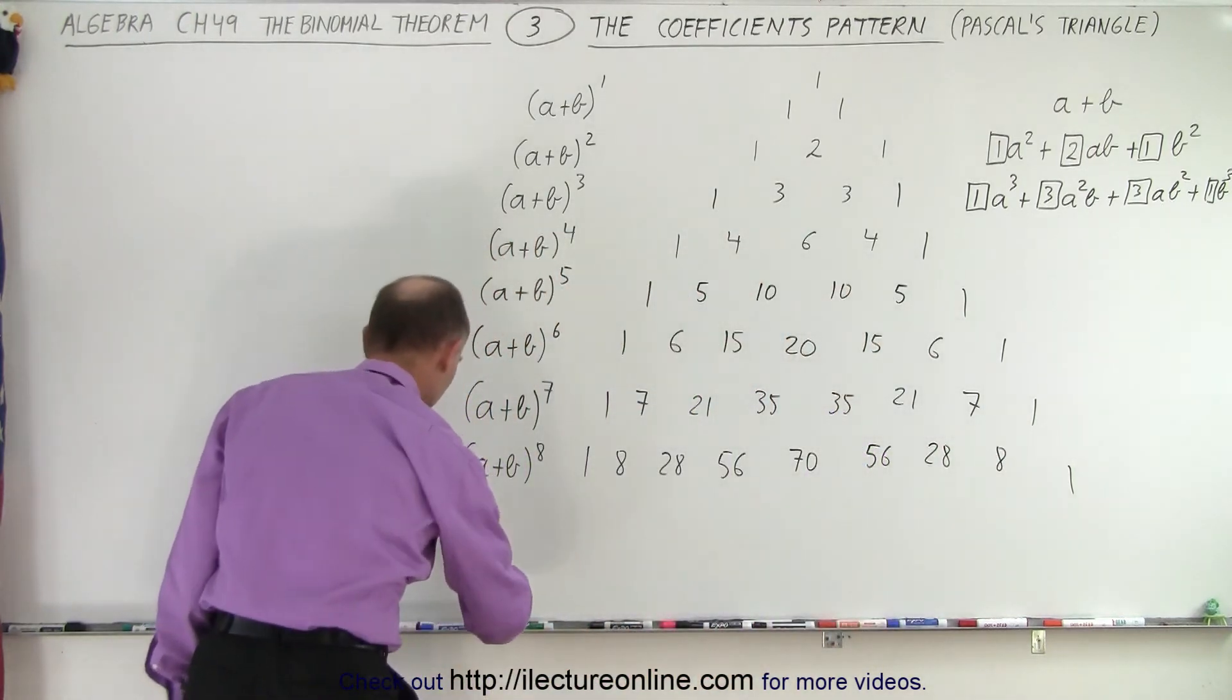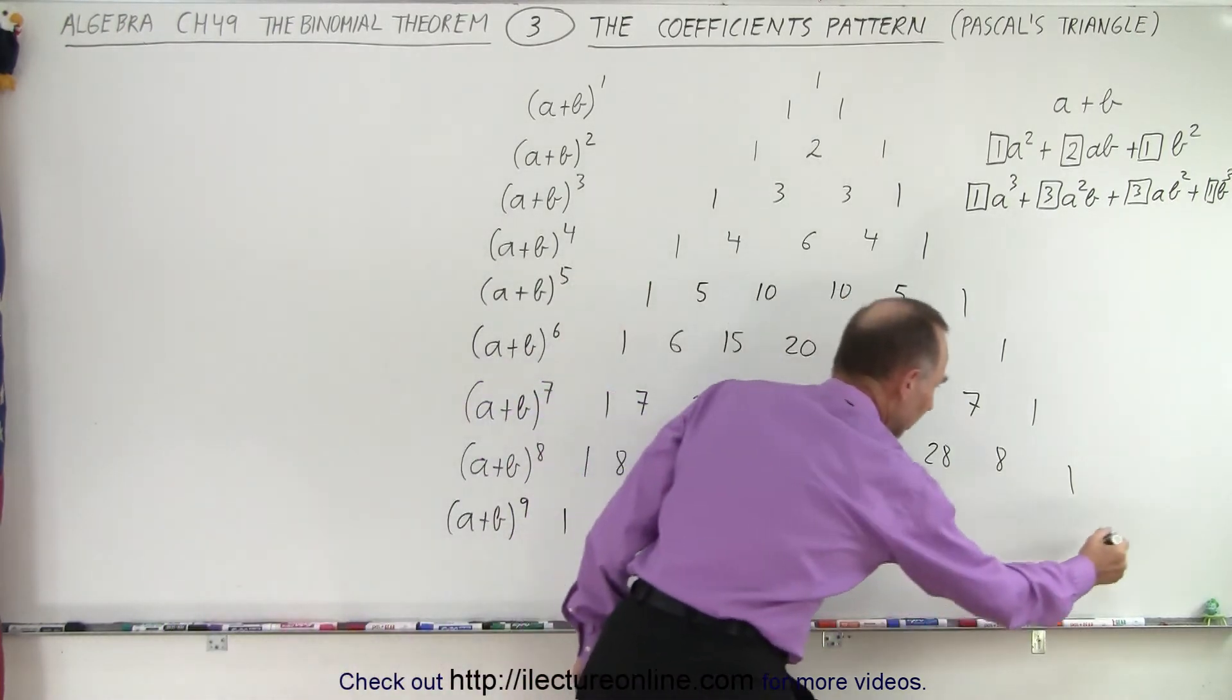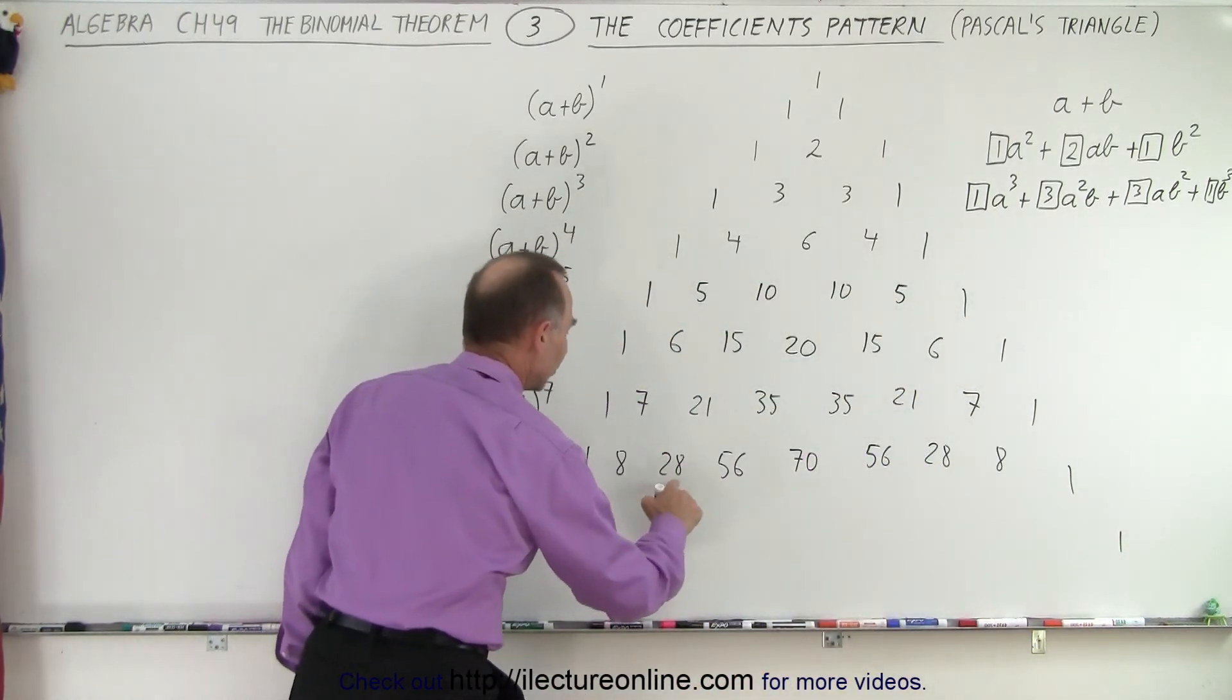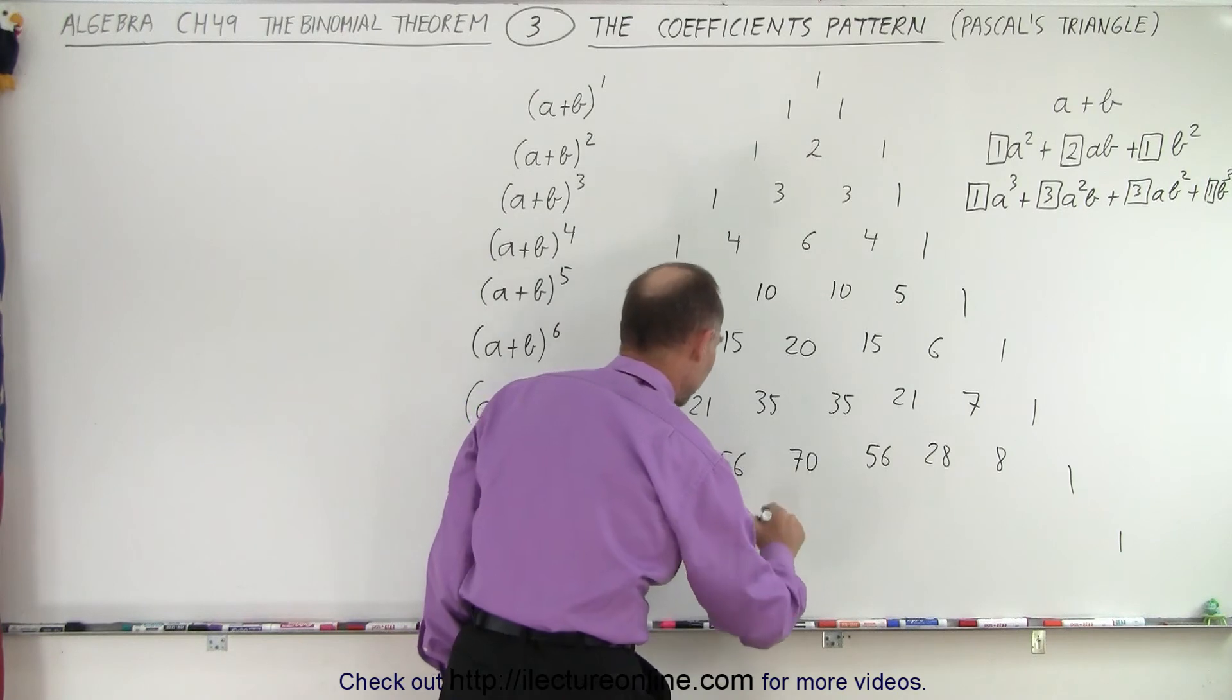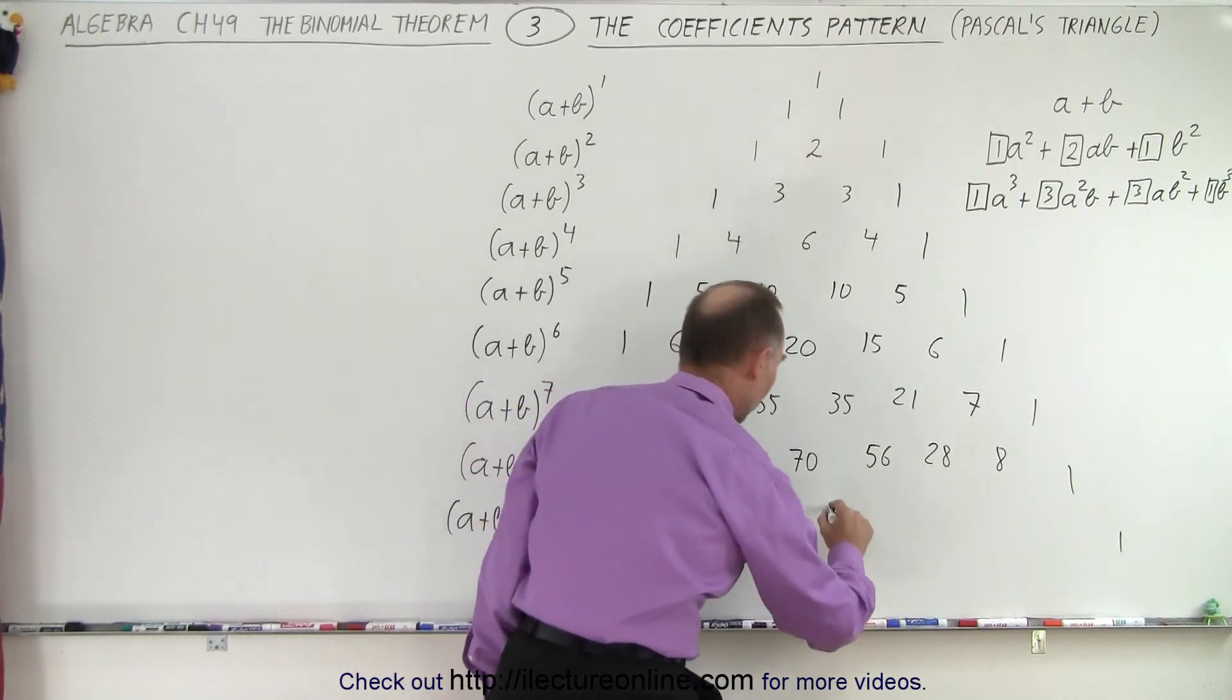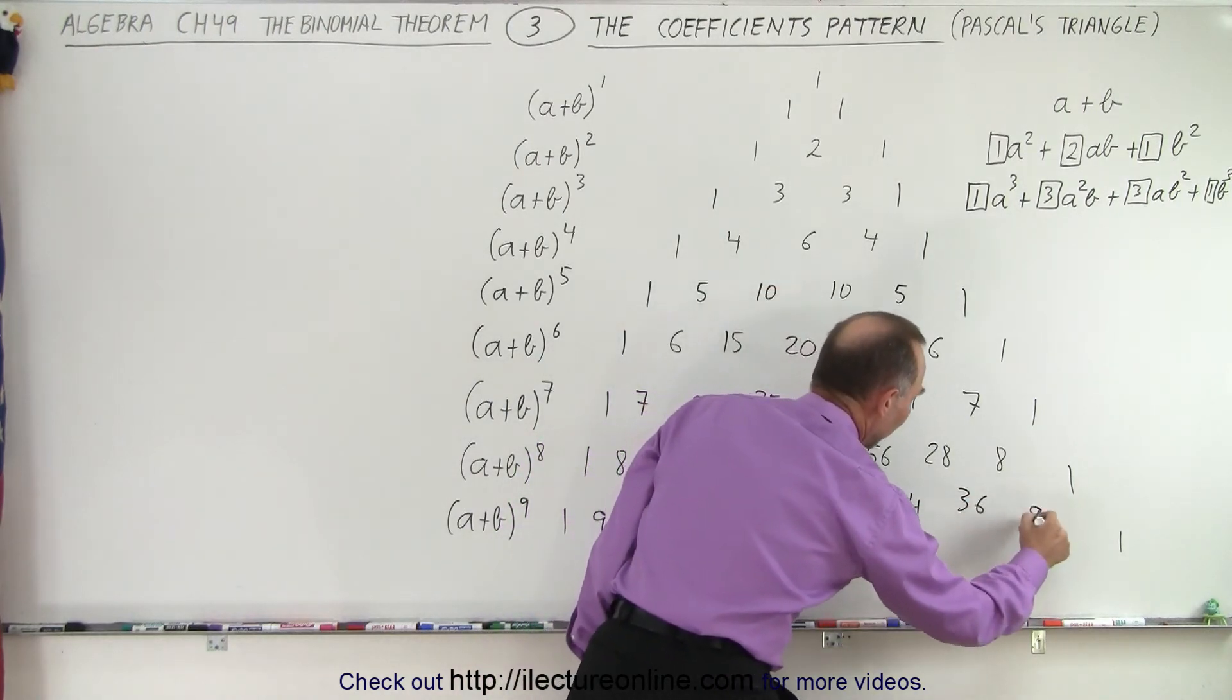Let's do one more. How about a plus b to the ninth power? Again, we move the ones out, giving ourselves a little bit more room. 1 plus 8 is 9. 8 plus 28, 36. 28 plus 56, that's 70. That's 84. 56 plus 70, that would be 126. 70 plus 56, 126. 56 plus 28, that's 84. 36 and 9.